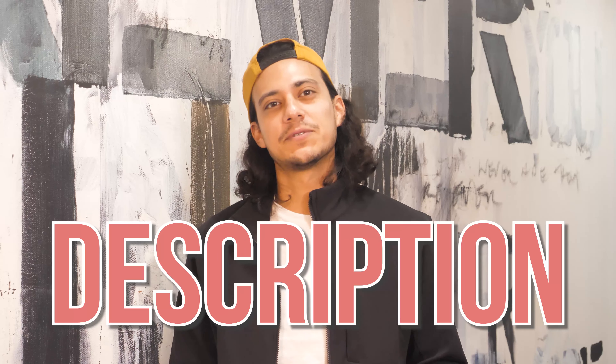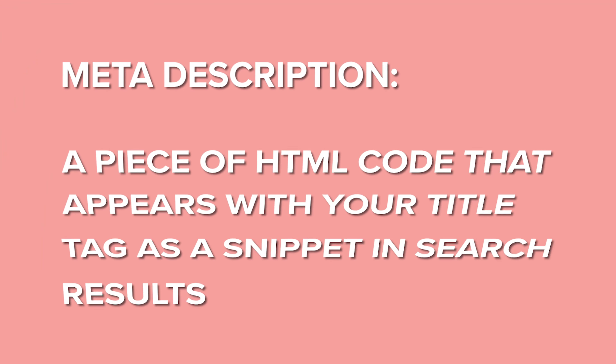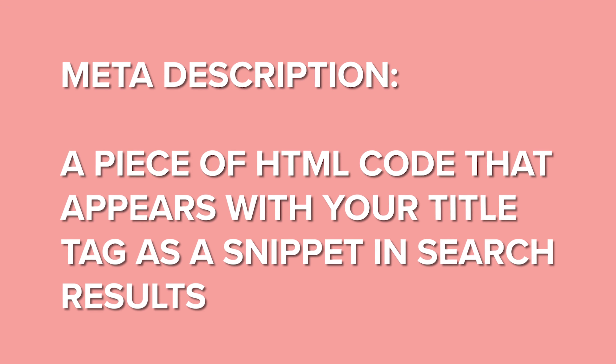Your web page's meta description tells Google what it's about. This is a piece of HTML code that appears with your title tag as a snippet in search results. It's also a great opportunity to include your target keywords to increase click-through rates.